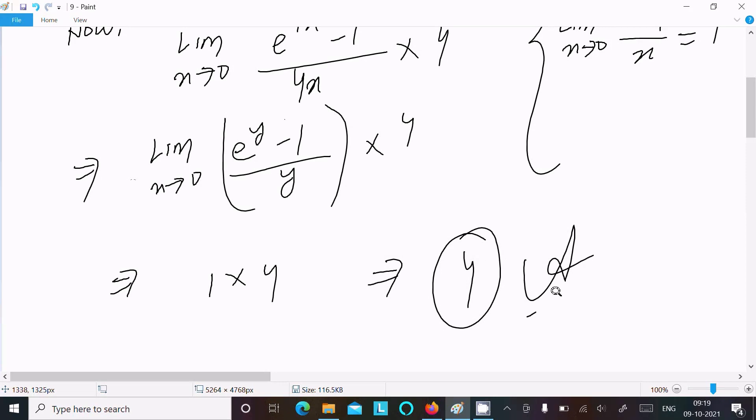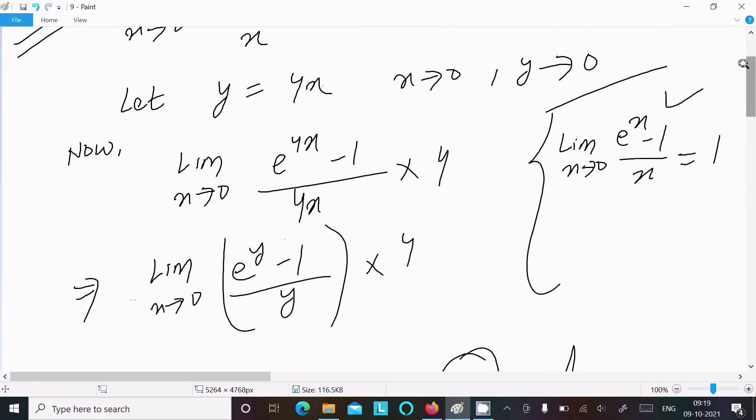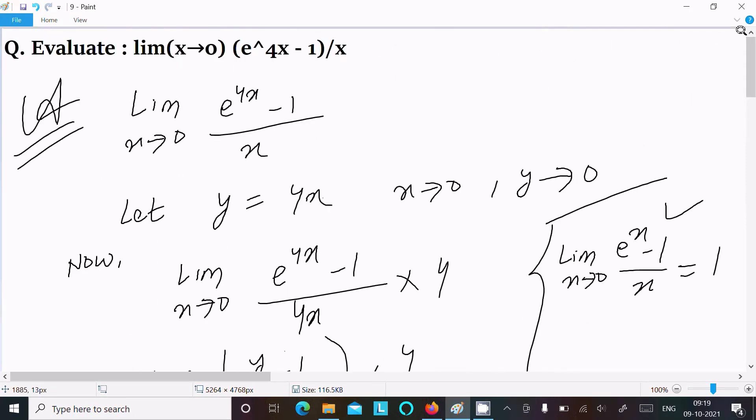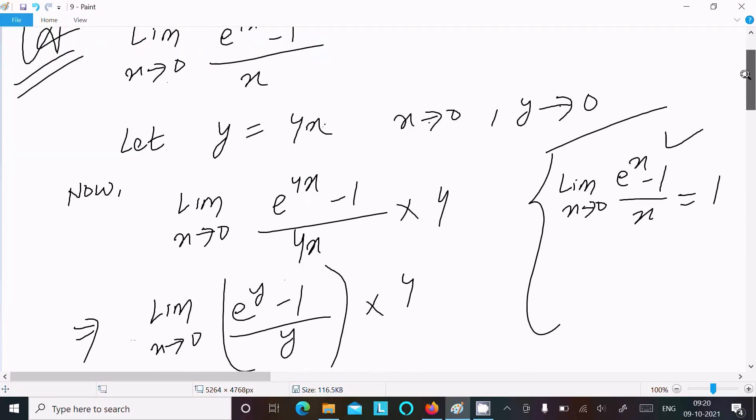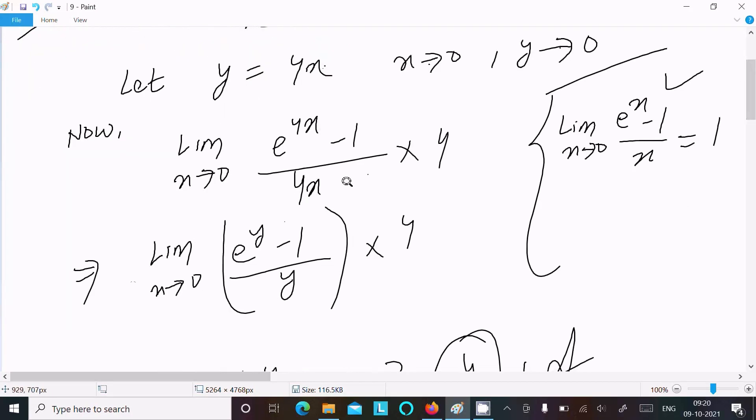One time going to repeat: write the given and assume y equal to 4x. So here x tends to 0, then y also tends to 0. After that, multiply denominator and numerator with 4.